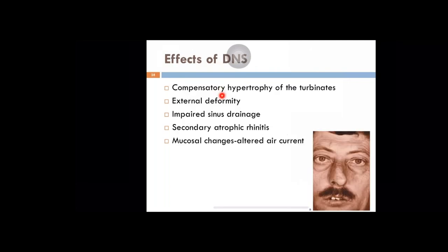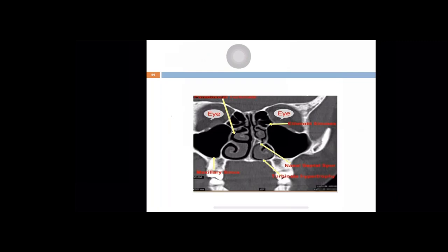What will happen if there is a deviated nasal septum? There can be compensatory hypertrophy of the inferior turbinate on the opposite side. There can be external deformity — a crooked nose deformity on the external aspect leading to cosmetic deformities. There can be impaired sinus drainage if there is a gross deviation impinging on the middle turbinate and pushing it laterally, reducing space in the middle meatus and leading to secondary sinusitis. This CT picture shows a sharp deviation impinging on the lateral wall of the nose, reducing middle meatus space.